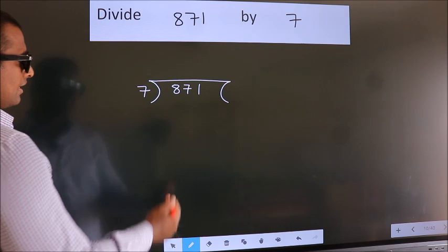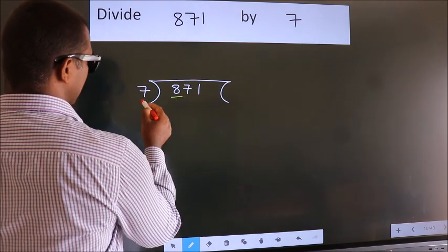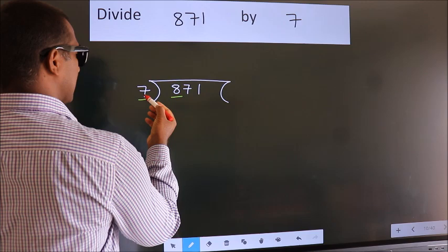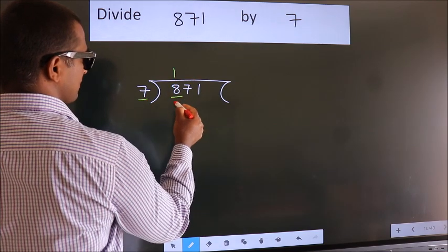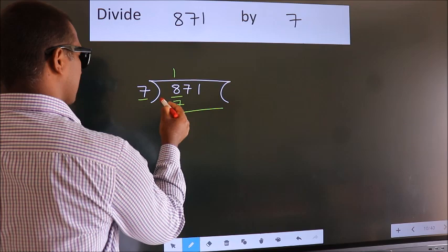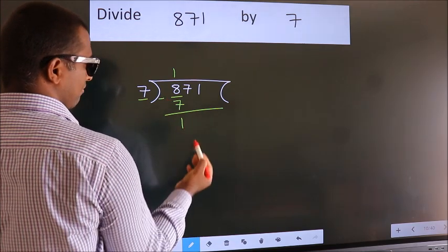Next, here we have 8, here 7. A number close to 8 in the 7 table is 7 times 1 equals 7. Now we should subtract. We get 1.